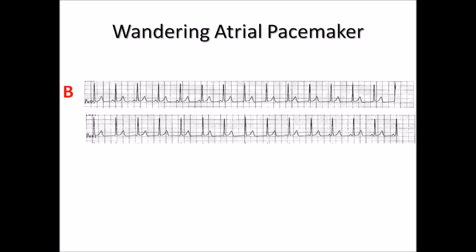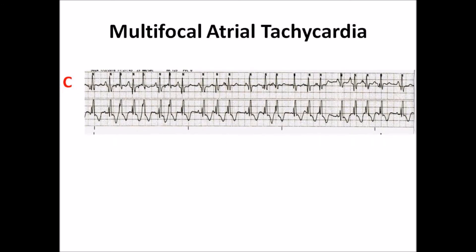Strip B is wandering atrial pacemaker, or WAP. These kinds of rhythms are difficult to catch in short strips. However, cardiac telemetry makes it easy, but you need to inspect and follow the P-wave transition. Strip C is multifocal atrial tachycardia. Notice the variable P-wave morphology. This rhythm is often misread as atrial fibrillation, so be careful next time you encounter this rhythm.